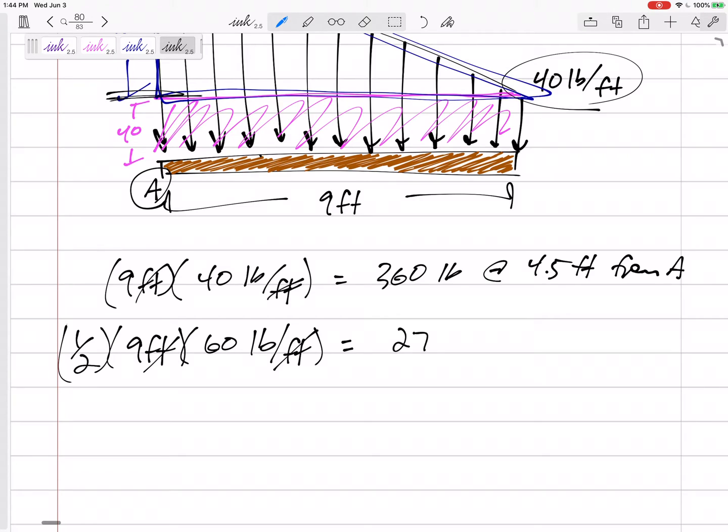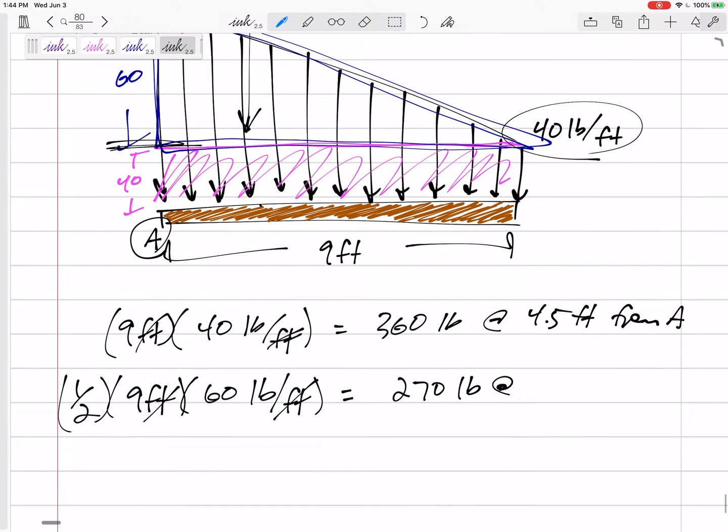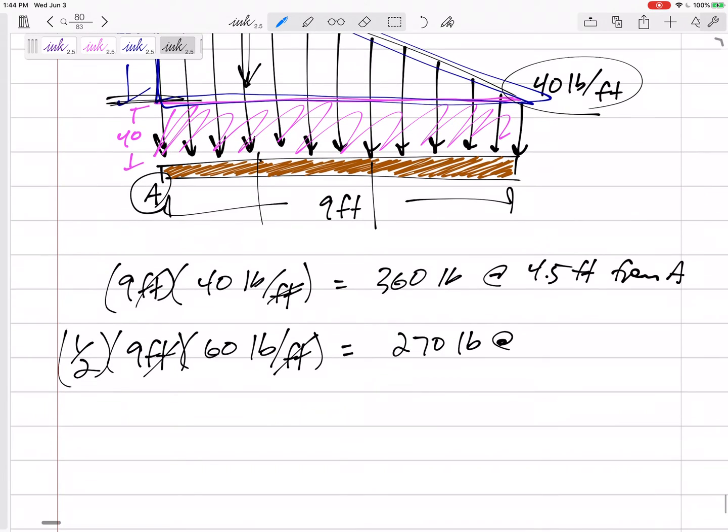And this is going to be 270 pounds at, all right, where is it? Where's the centroid of this triangle? It's one third and it'd be closer to the left than the right. See that? It'd be closer to the left than the right and break this up into thirds. So it would be three feet from A.